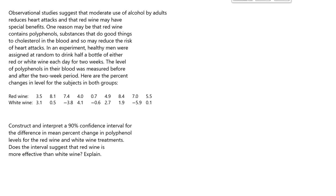Observational studies suggest that moderate use of alcohol by adults reduces heart attacks and that red wine may have special benefits. One reason that red wine is supposedly good for us is because it has these things, polyphenols. In an experiment, healthy men were assigned at random to drink half a bottle of either red or white wine each day for two weeks. The level of polyphenols in their blood was measured before and after the two-week period. Here's the percent changes in subjects for both groups. We look at these numbers here, the blue arrow versus the red arrow. These are the white wine people, and the blue arrow is the red wine people, and we can see that those percent changes in the red wine row of data are all positive, and they certainly look bigger than what's happening in the white wine row.